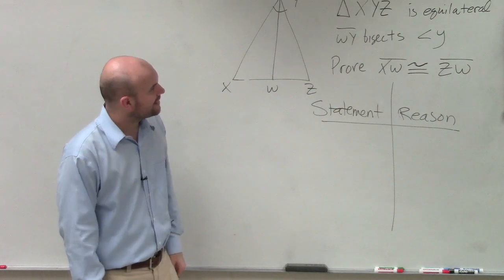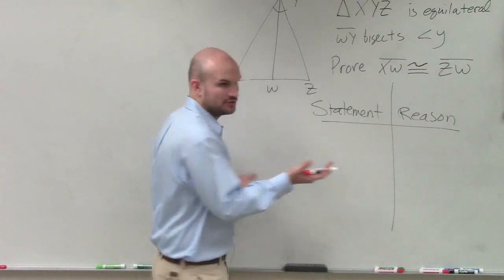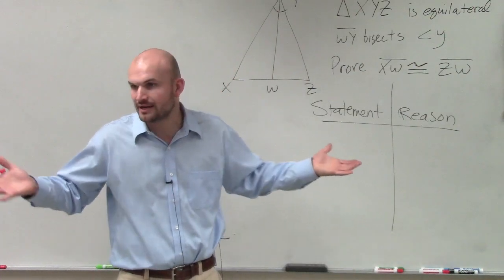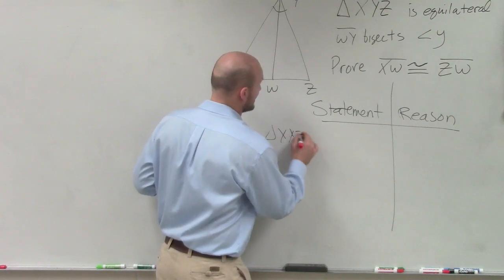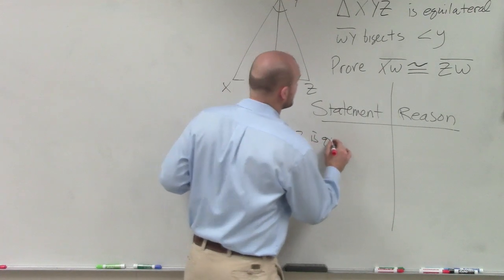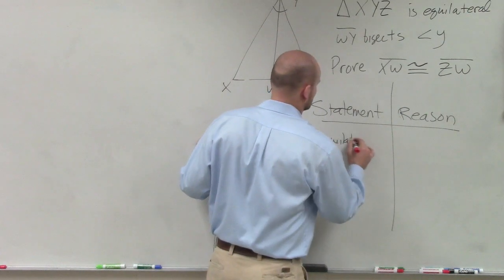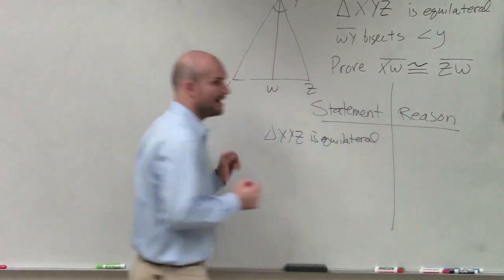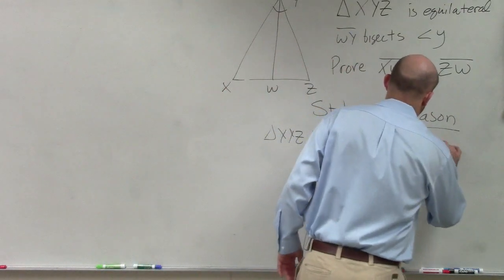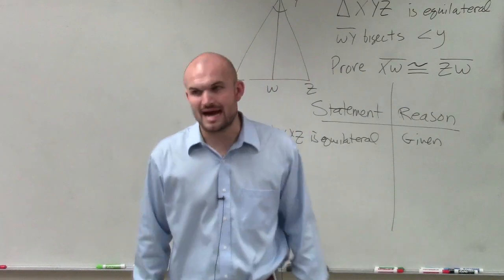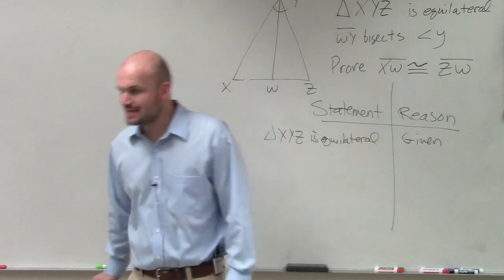So they say triangle XYZ is equilateral. So that's a truth, right? We have to agree upon that. It's given to us. So we say triangle XYZ is equilateral. And why do we know that's true? Because it's given to us. We did not assume it's true. We did not make it up. It was given to us to be true.